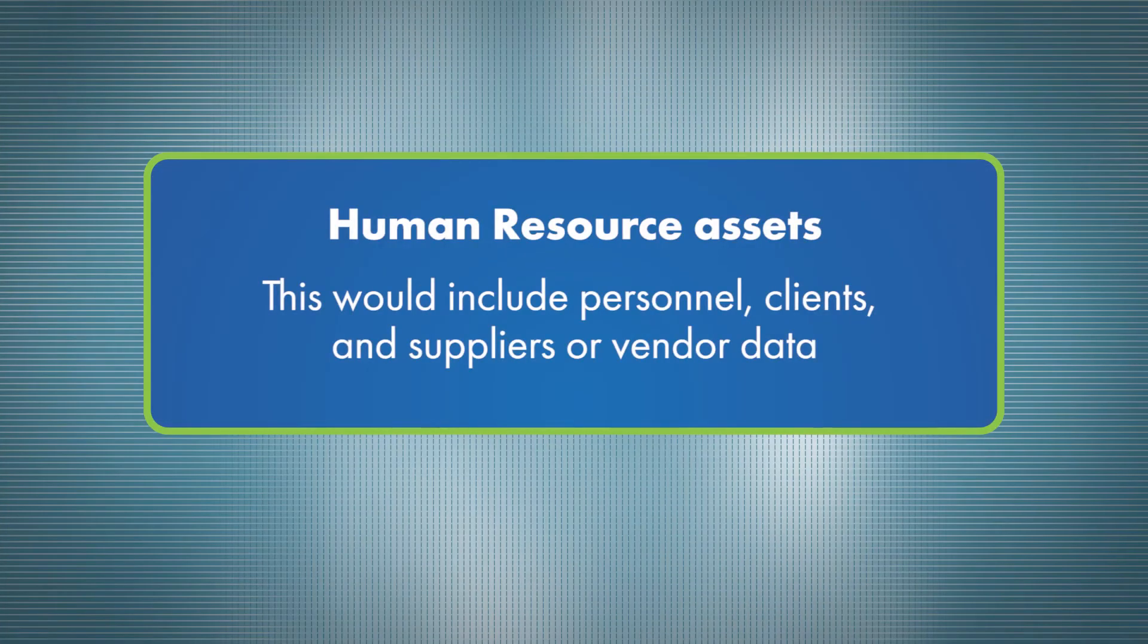Vulnerability management must identify and call out which are considered critical and non-critical systems. As a baseline, assets can be categorized into one of four groups. Number one, human resource assets. This would include personnel, clients, and suppliers or vendor data.